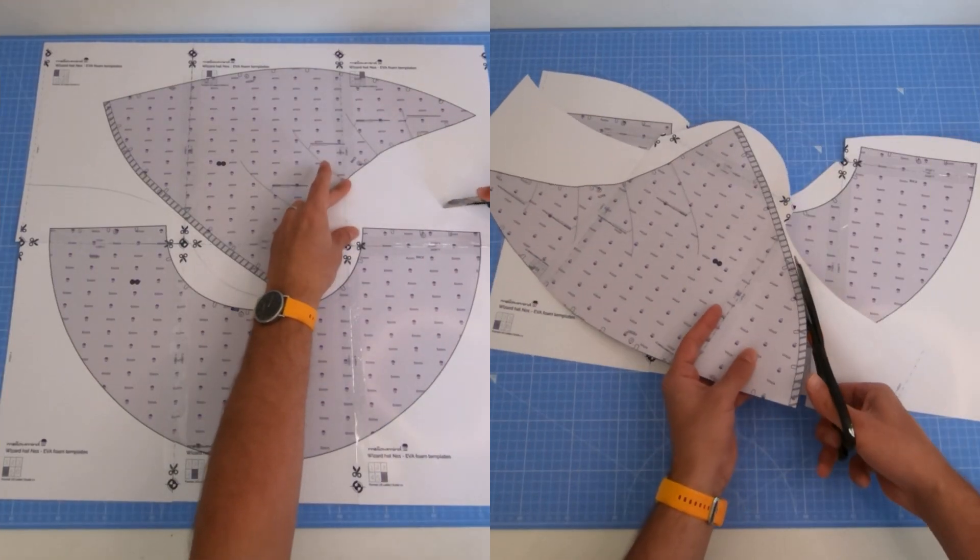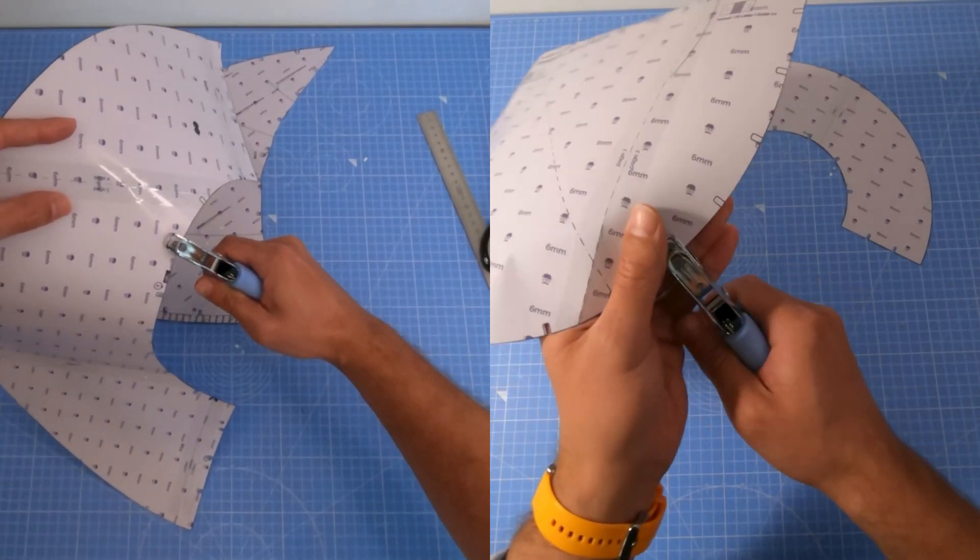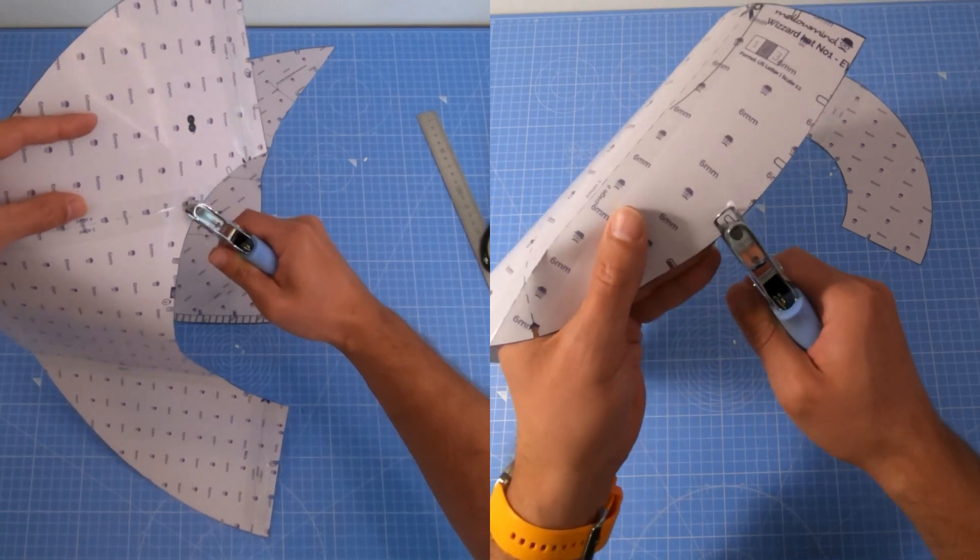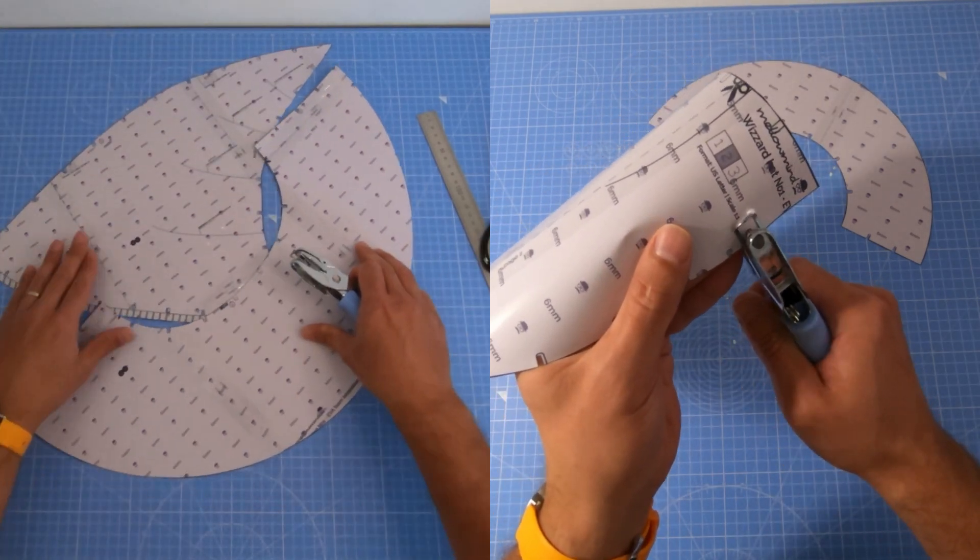Now grab your scissors and start cutting, take your time and don't rush. Use pattern nother or scissors to cut all the registration markers along the edges, they will help you glue adjoining parts evenly together.